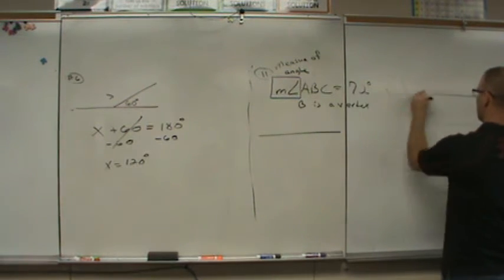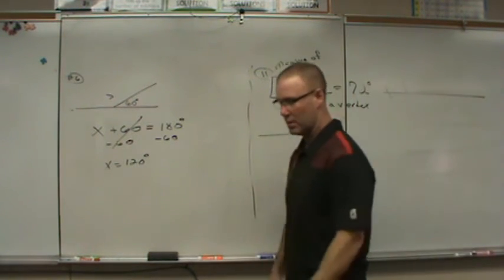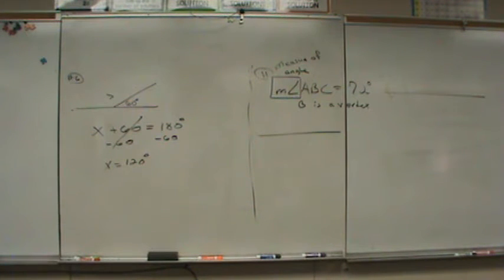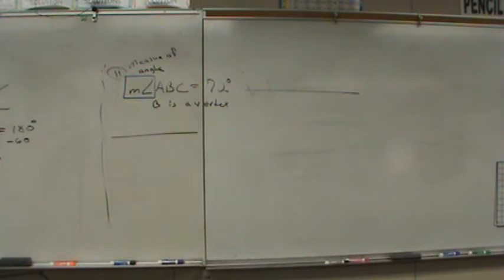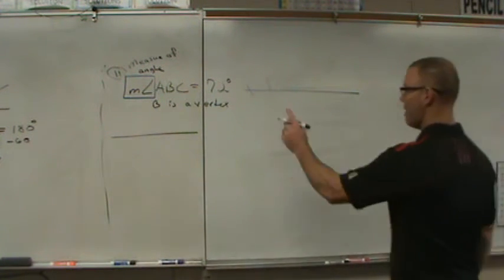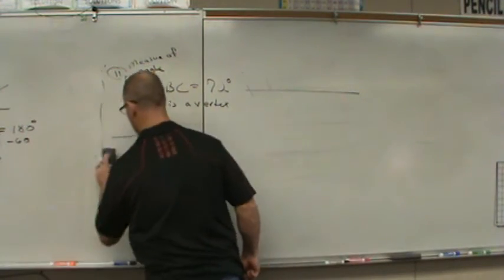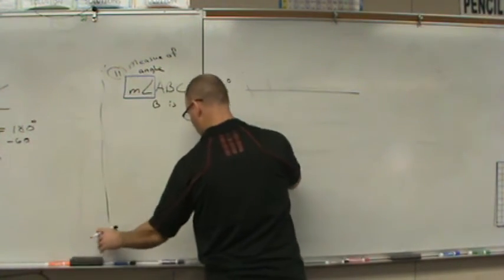So over here, next to this, and I'm not sure if the camera can see that or not, so I might move it. But next to it, you have those four lines. That's where you're going to draw your diagram. So the very first one, it says measure of angle ABC is 72 degrees, and it's a vertex. Well, first of all, let's talk about degrees and make sure we understand degrees.